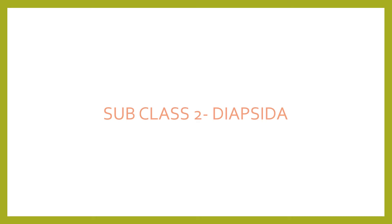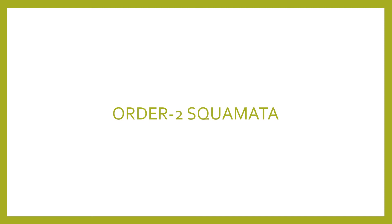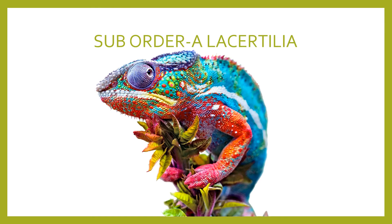Second subclass Diapsida: here the reptiles have a skull with two temporal openings on either side, separated by the bar of postorbital and squamosal bone. Under Diapsida, the order Squamata possesses living reptiles. They have a movable quadrate and possess procoelous vertebrae. Their exoskeleton is made up of horny epidermal scales, shields, and spines. They have single-headed ribs. Their dentition is acrodont or pleurodont.